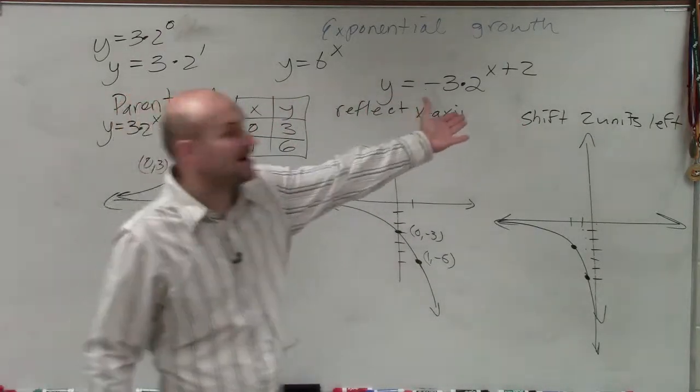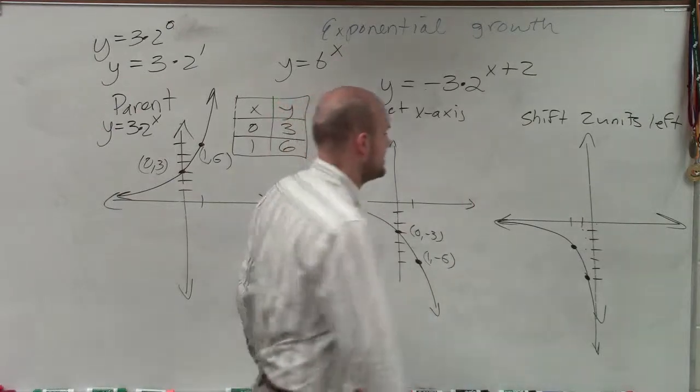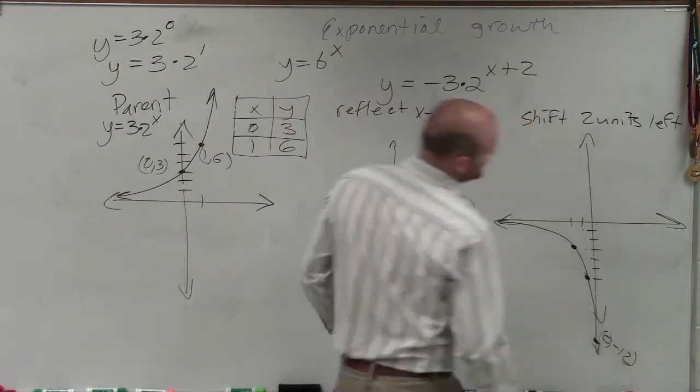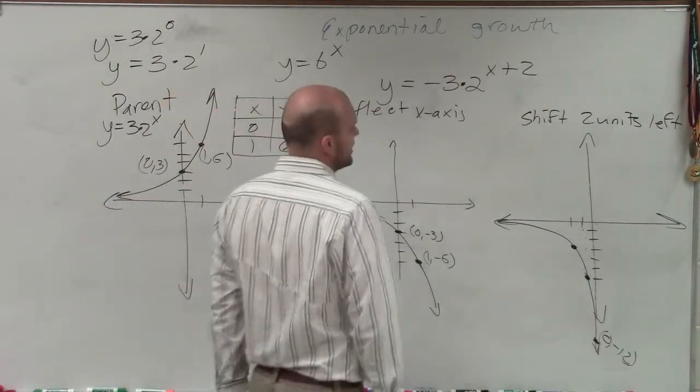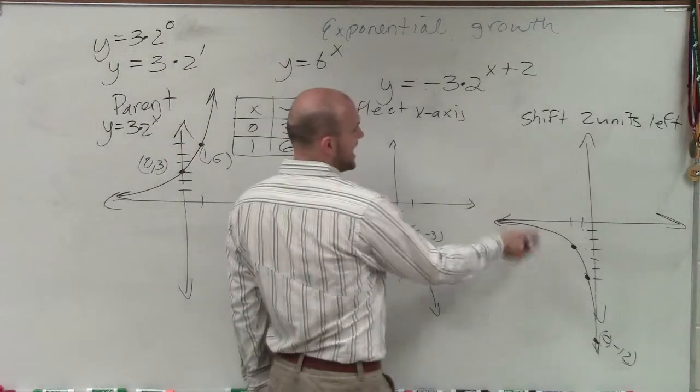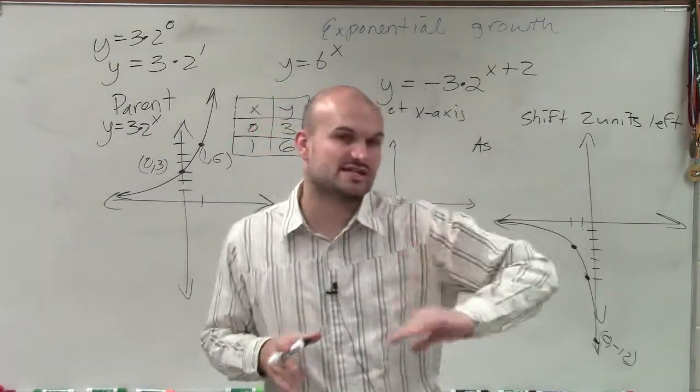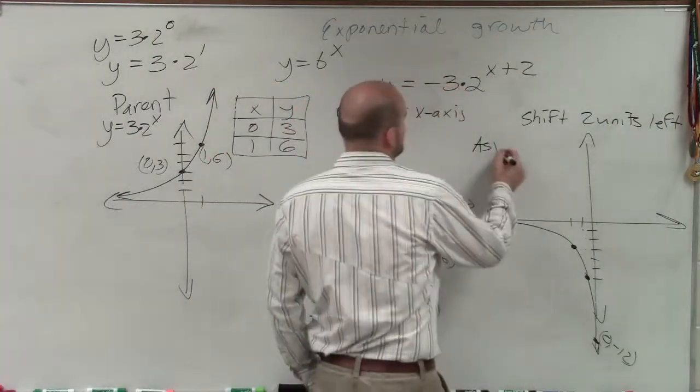And if we wanted to go ahead and find the y intercept, again, we could put 0 in for there. And we'd see that that's going to have a y intercept at 0, negative 12. But that's not something we are counting on in this exact example. The next thing, though, we can determine our domain and range. The asymptote has not changed. All we did was the asymptote is only going to change if we're going to be shifting our graph up or down. So the asymptote is still going to remain the same.